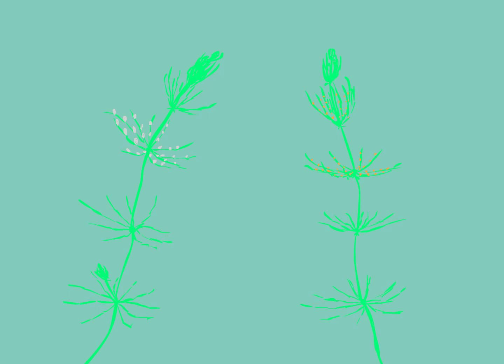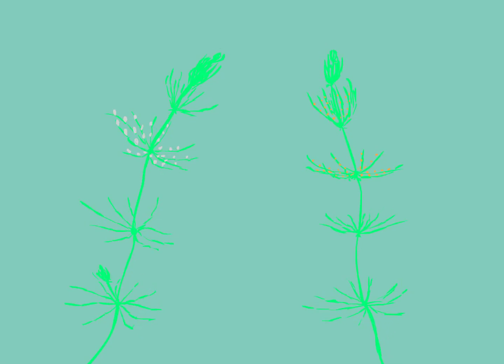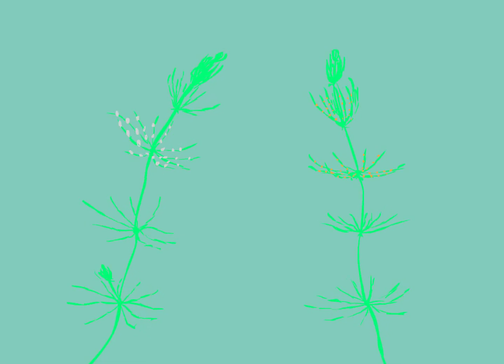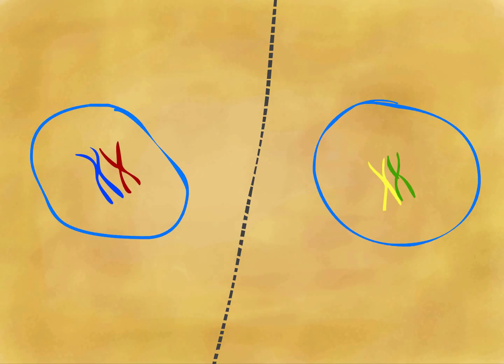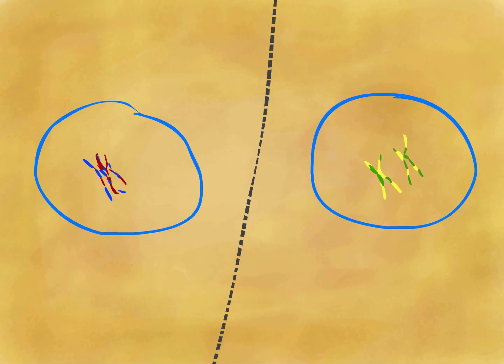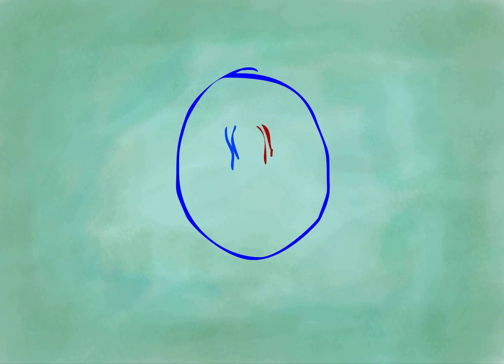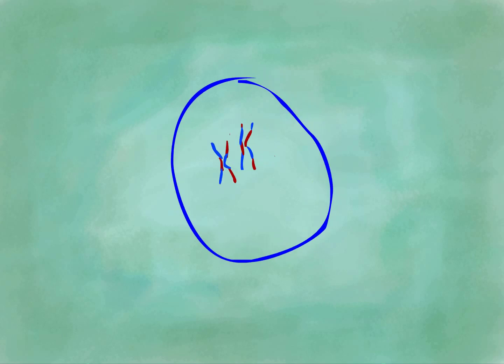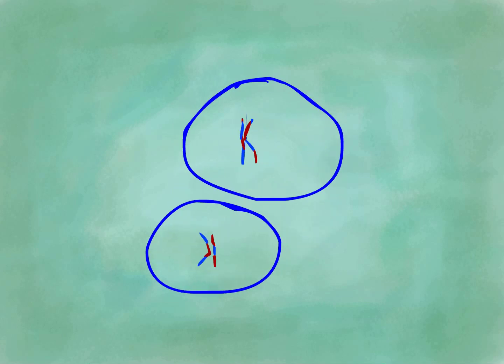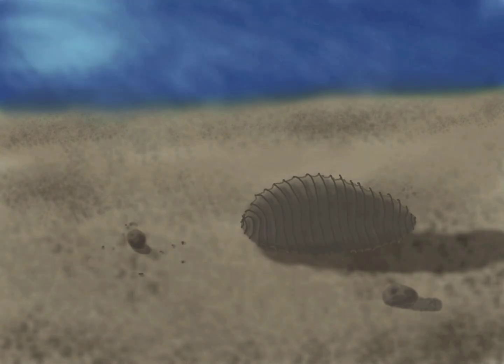Either way, this mixes the parents' genomes and creates completely new gene combinations in the offspring — the evolutionary benefit of sexual reproduction. What emerges from the top of the spore coat is a single haploid cell.